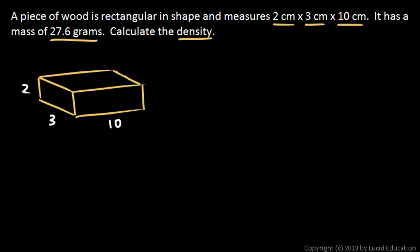Those measurements are all in centimeters, so we need to find the density, and so we need to calculate the volume. The volume for a rectangular solid is the length times the width times the height, so it's these three numbers multiplied together.